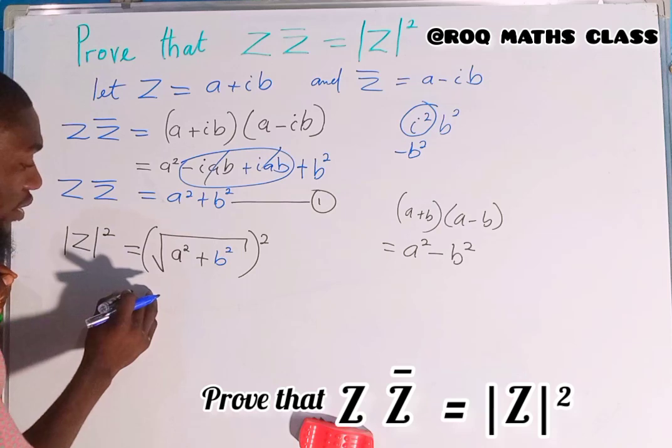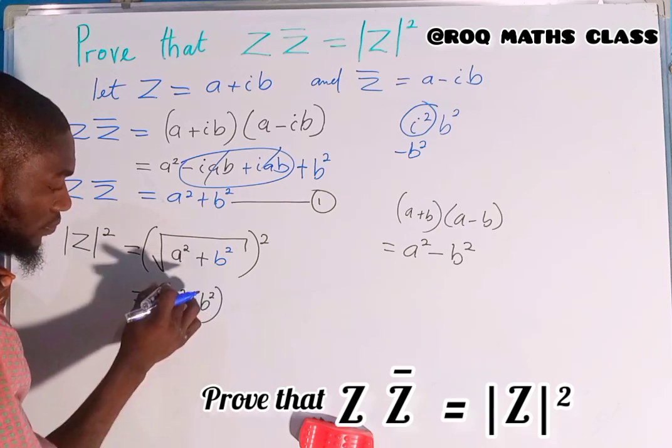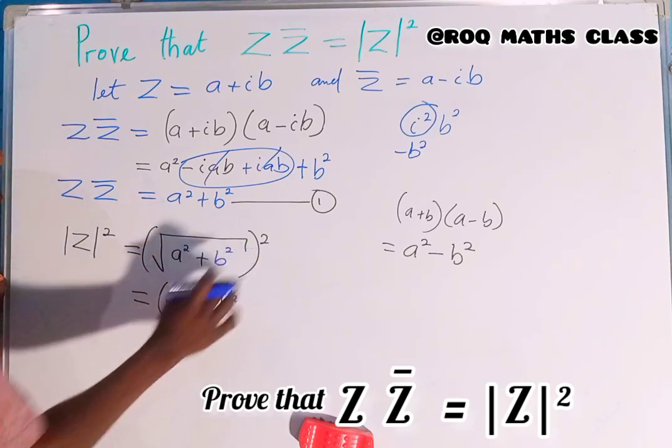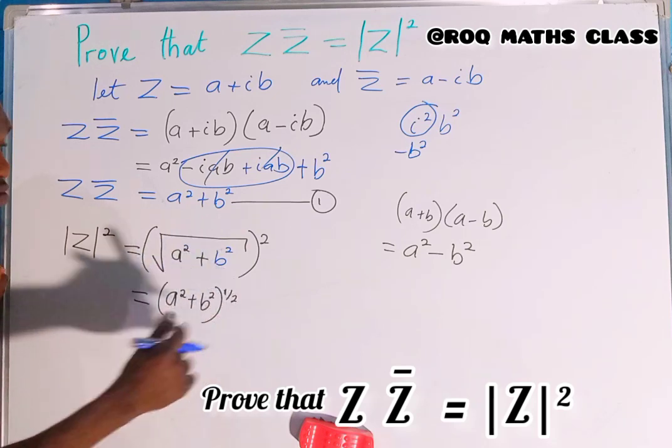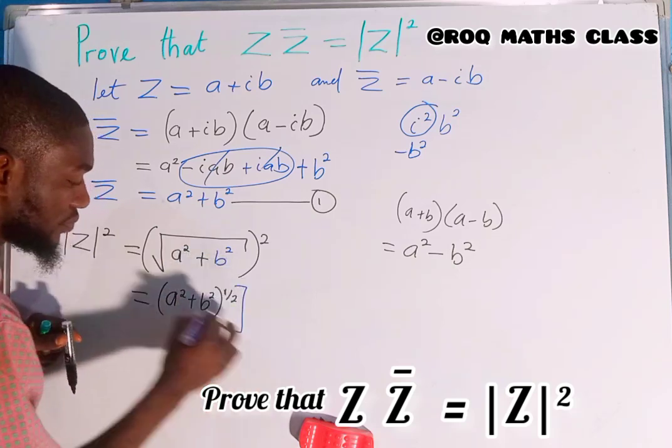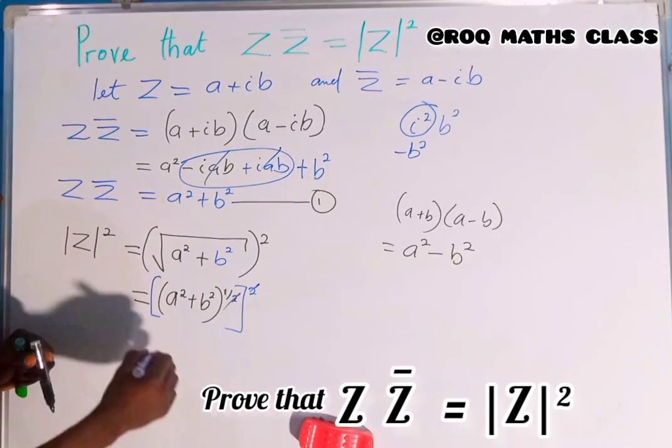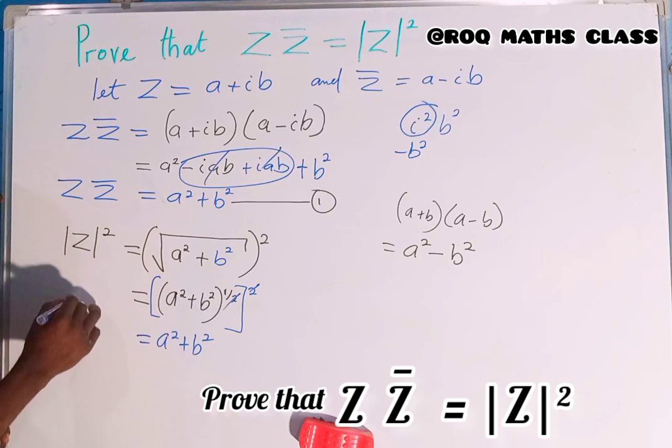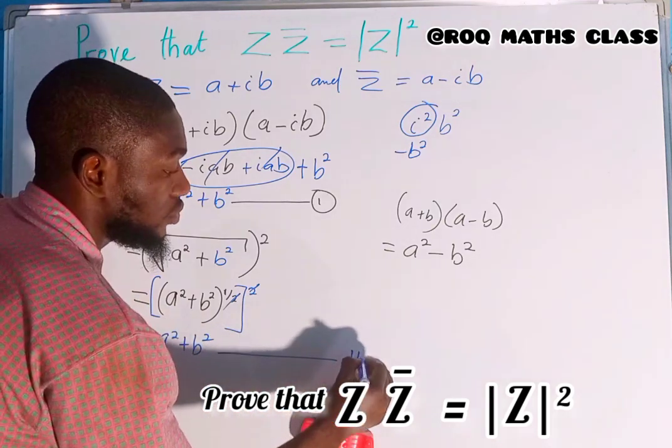This equals (a² + b²)^(1/2) raised to the power 2, because the square root of a² + b² is (a² + b²)^(1/2). These powers cancel out, giving a² + b². Therefore, the modulus of Z squared equals a² + b², which is equation two.